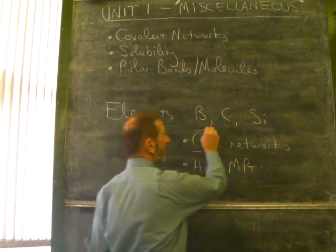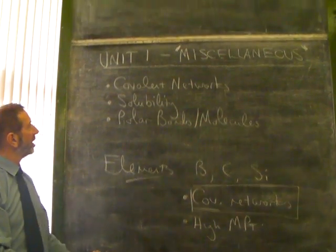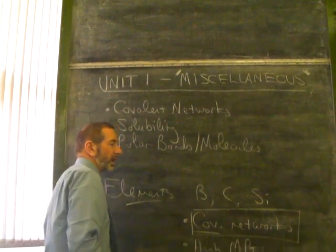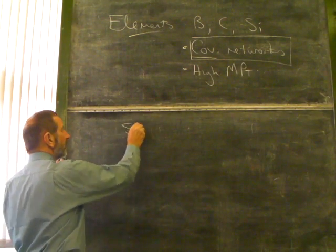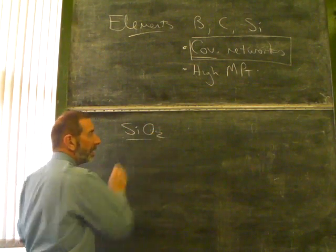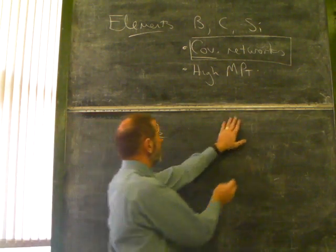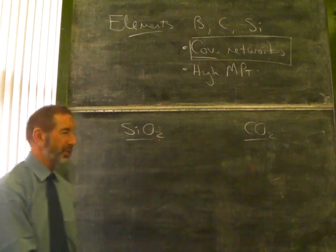But this covalent network structure is not unique to elements. Some compounds can also have a covalent network. And there's two that are ready to crop up. Here's one of them. We've got silicon dioxide. Silicon dioxide has a covalent network. One good way to get your head around this is to compare silicon dioxide with carbon dioxide.